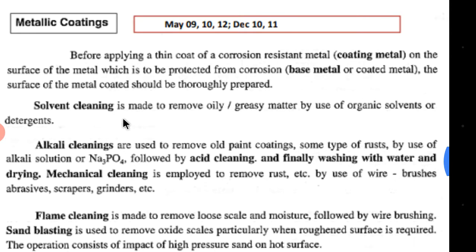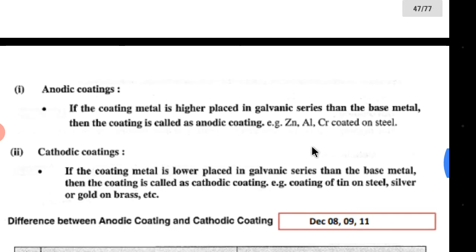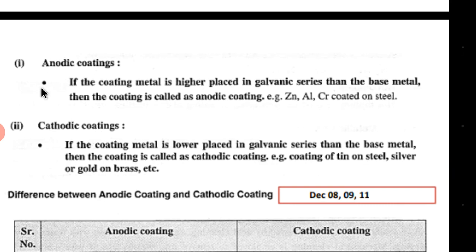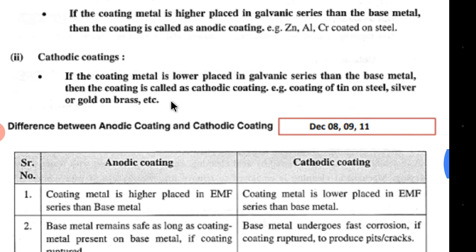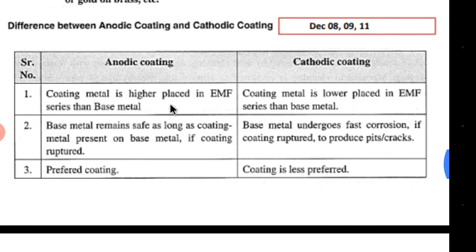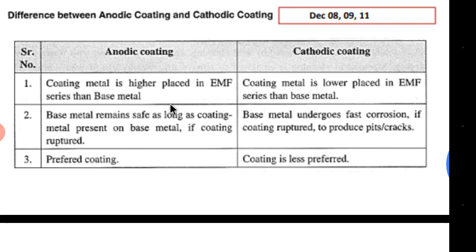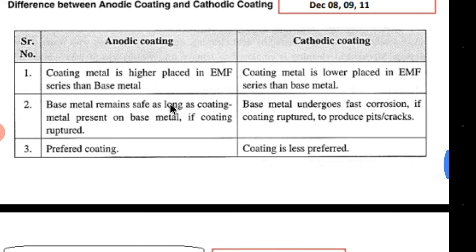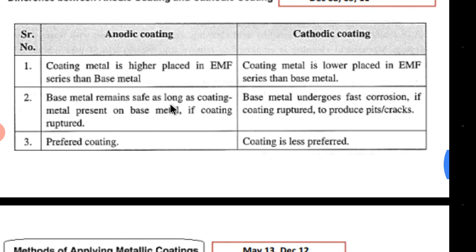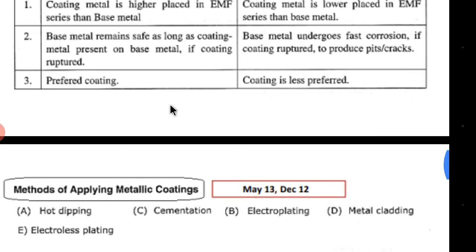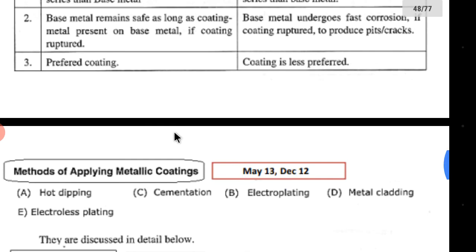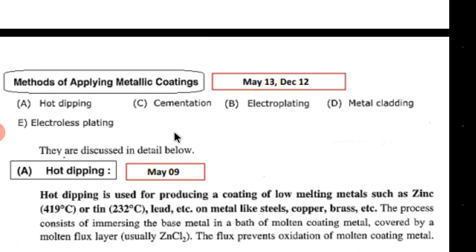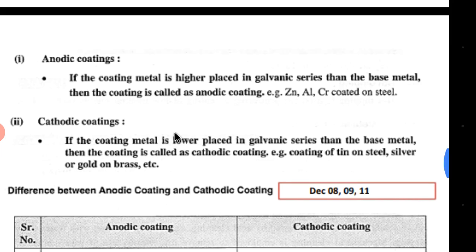This is an important exam topic — what is meant by metallic coatings, what are the types, which type is preferred and why. Anodic coating is preferred because if corrosion starts, only the upper surface gets corroded and the underlying metal remains intact for longer. This can also be asked as: differentiate between anodic and cathodic coating. The slide shows three comparison points. Methods of applying these coatings will be covered in the next session.